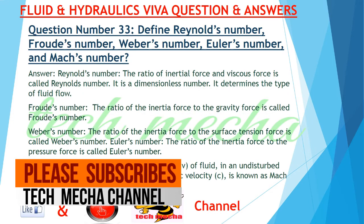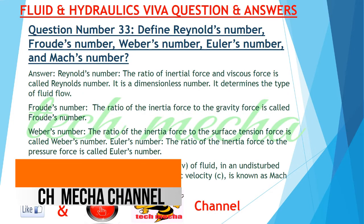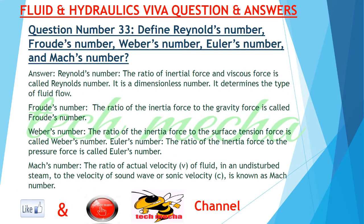Question number 33: Define Reynolds' number, Froude's number, Weber's number, Euler's number, and Mach's number. Answer: Reynolds' number — the ratio of inertial force to viscous force is called Reynolds' number. It is a dimensionless number. It determines the type of fluid flow.